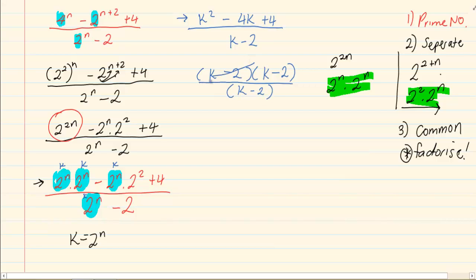But we are not done. You have to go back and take this k out and put the original 2 to the power of n in. So our final answer is 2 to the power of n minus 2.